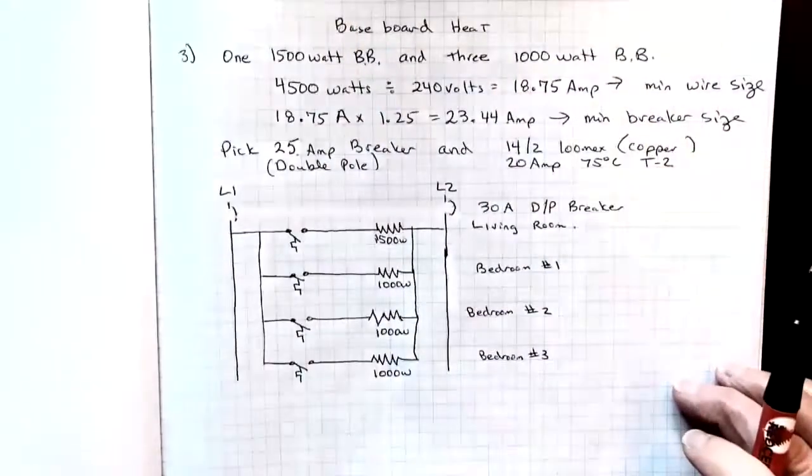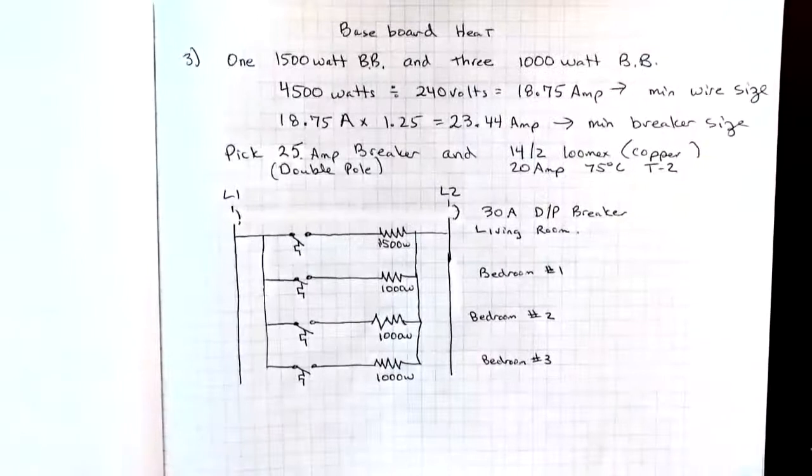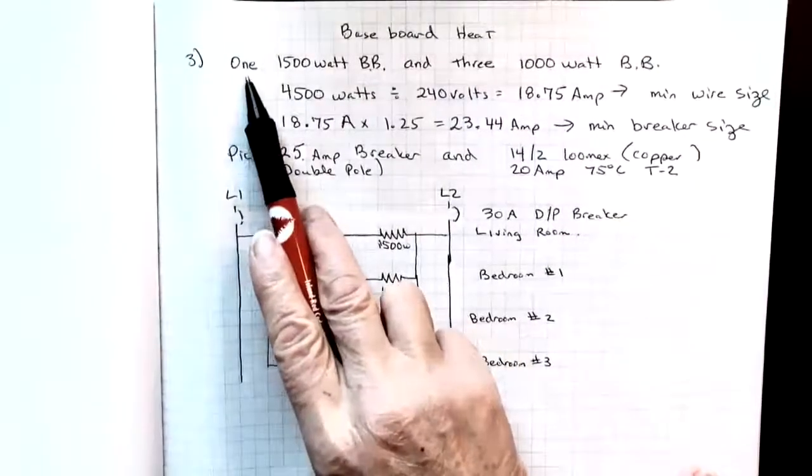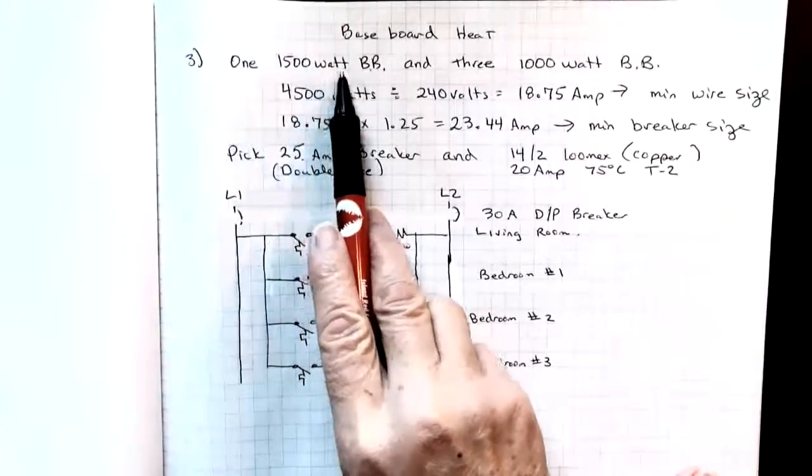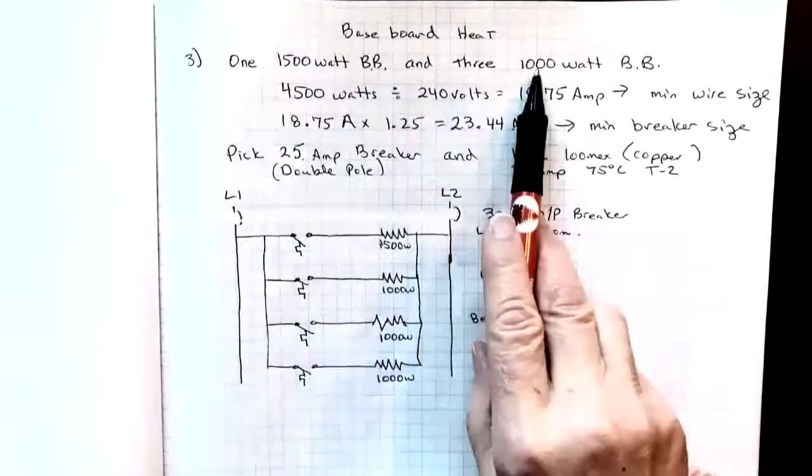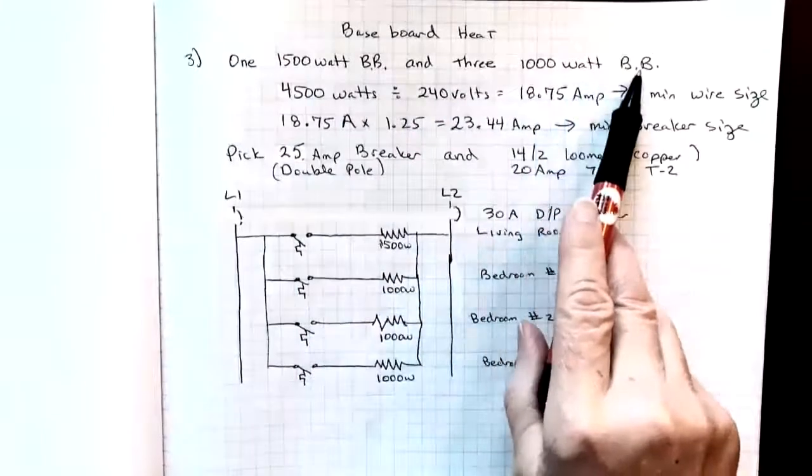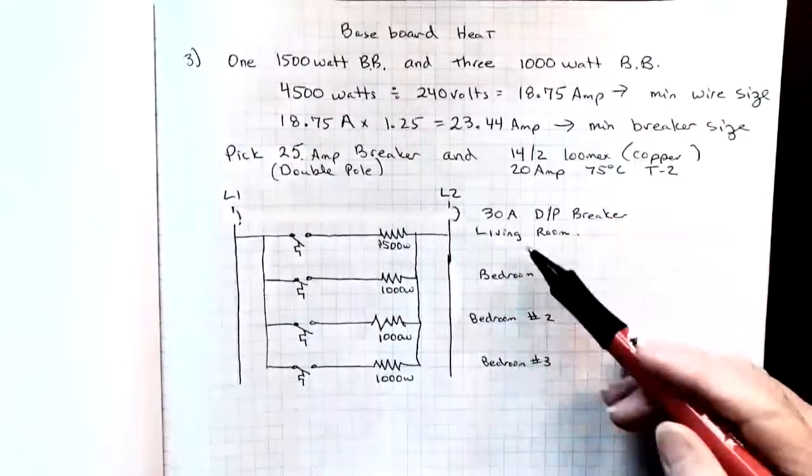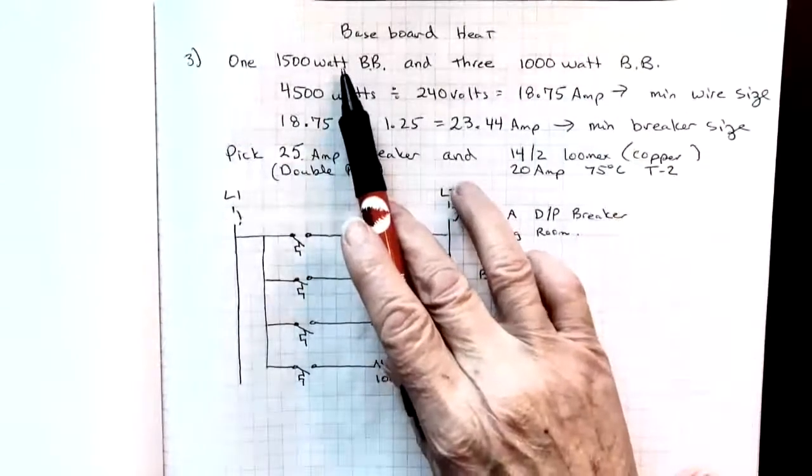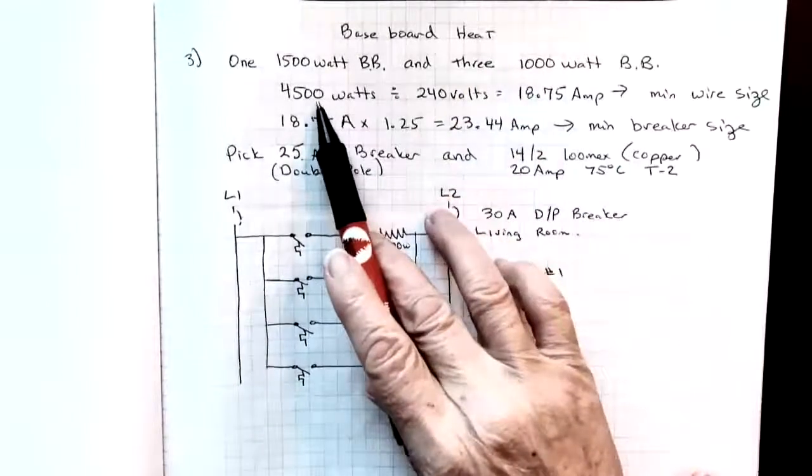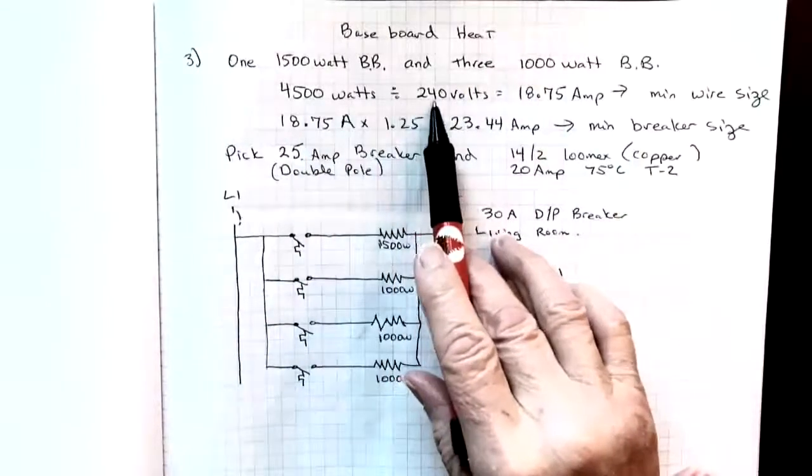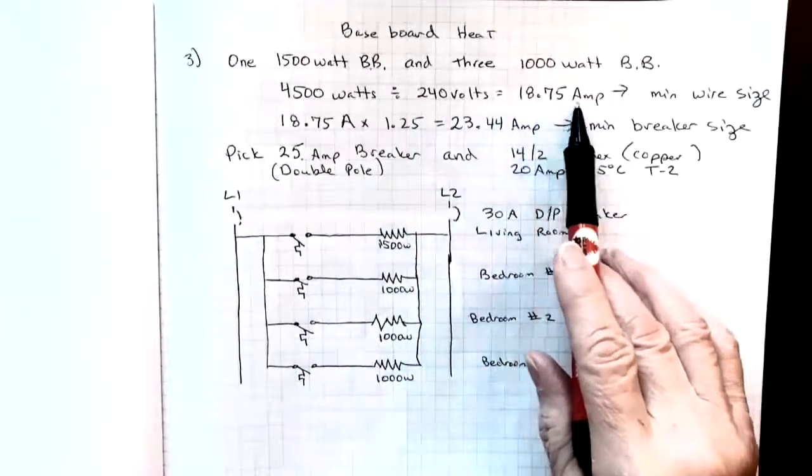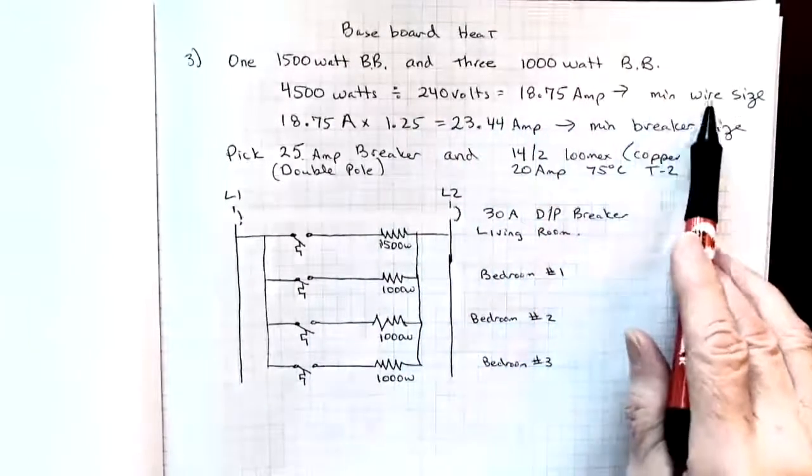Often we load up our baseboard heater circuits. And in this case, my third example has one 1500 watt baseboard heater and three 1000 watt baseboard heaters. For example, this might be one in the living room, one in each of three bedrooms. So add up those wattages, I get 4500 watts, assuming it's 240 volts divided by 240 gives me 18.75 amps. That's my minimum wire size.